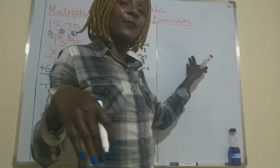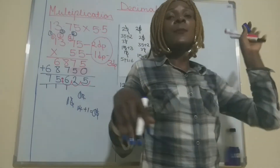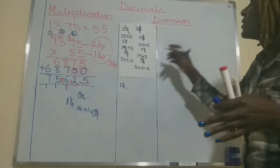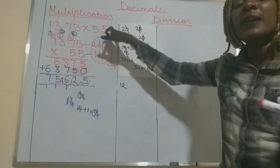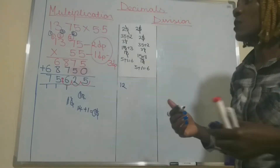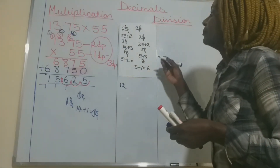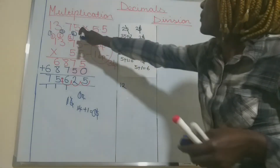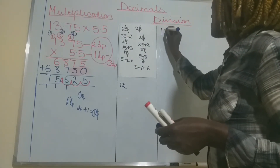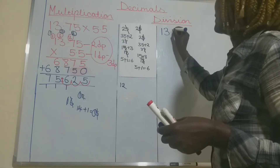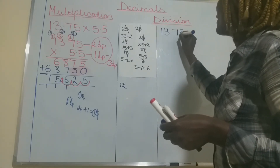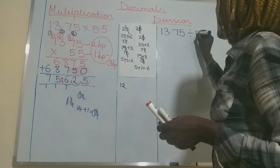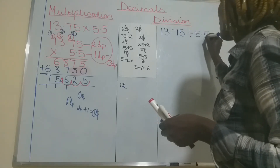Now dividing. Suppose you are dividing — I'll use the same numbers. So this is what you can do: 13.75 divided by 5.5. Dividing decimals is very simple, so just see how I'm going to do it.